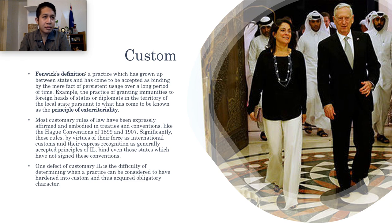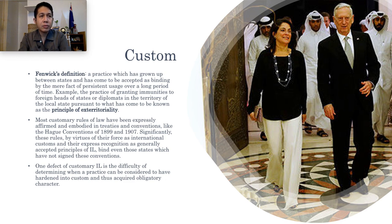Custom is defined as a practice which has grown up between states and has come to be accepted as binding by the mere fact of persistent usage over a long period of time. For example, the practice of granting immunities to foreign heads of states or diplomats in the territory of the local state, pursuant to what has come to be known as the principle of extraterritoriality. Most customary rules of law have been expressly affirmed and embodied in treaties and conventions, like the Hague Conventions of 1899 and 1907. Significantly, these rules, by virtue of their force as international customs and their express recognition as generally accepted principles of international law, bind even those states which have not signed these conventions.